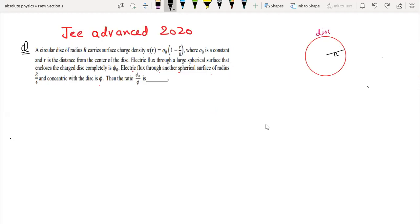A circular disk of radius R has a surface charge density sigma naught times 1 minus r by R, and this is variable. Sigma naught is a constant, r is the distance from center.